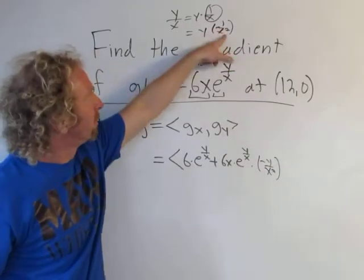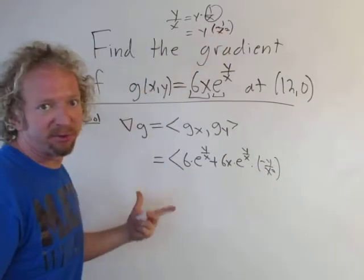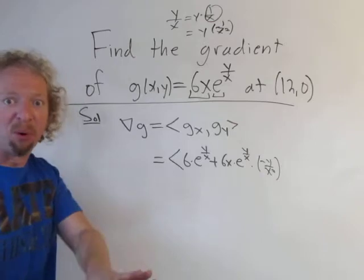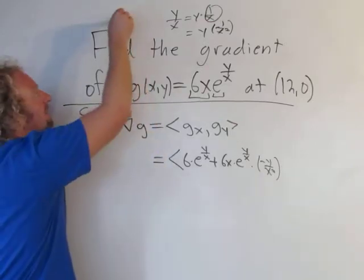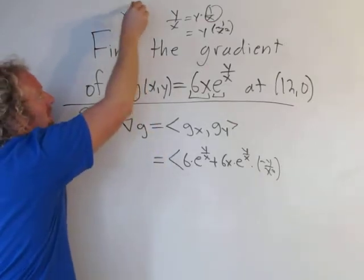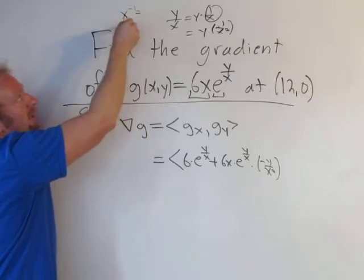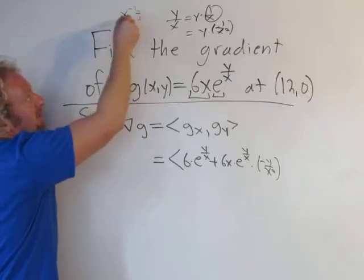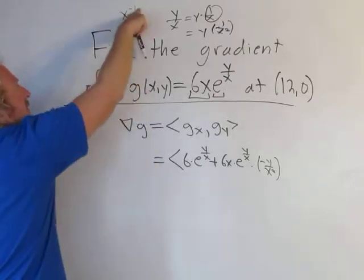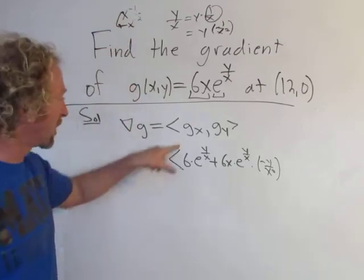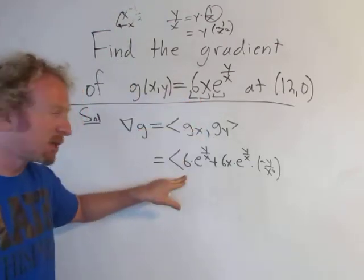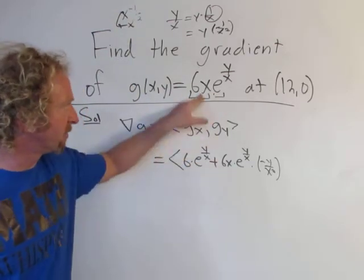So here you get negative y over x squared. If you don't know why the derivative of one over x is negative one over x squared, you can work it out, but at some point you'll memorize it. You can write it as x to the negative one and use the power rule, giving you negative x to the negative two when you differentiate.